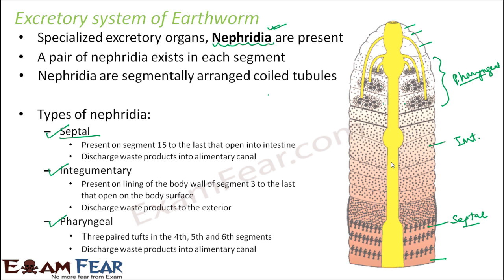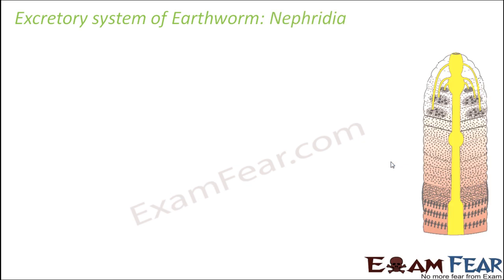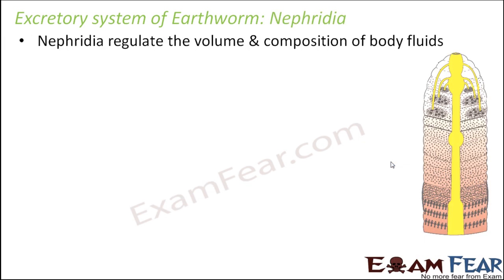Now let us look into the details of the functioning of nephridia. What does nephridia do? It basically regulates the volume and composition of body fluids. It checks that nothing is in excess and nothing is in short. It regulates the composition and whatever waste material it finds, it collects all of them and puts them into the alimentary canal or sends them outside.